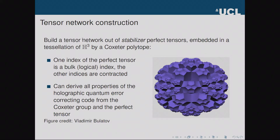With Coxeter group techniques in hand, we build the tensor network out of stabilizer perfect tensors — perfect tensors describing stabilizer quantum error correcting codes — embedded in a tessellation of H3 by a Coxeter polytope. One index of each perfect tensor is left uncontracted as a bulk index; the others are contracted with tensors in neighboring polytopes. We cut the tessellation at a finite radius, leaving uncontracted tensor legs on the boundary as boundary degrees of freedom. We can derive all properties of this tensor network from the Coxeter group and the perfect tensor, showing it has the same ADS/CFT-relevant properties as the HaPPY code.